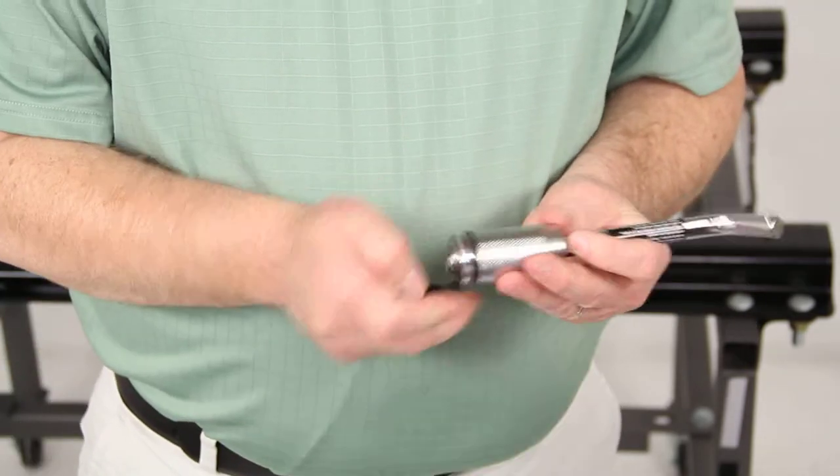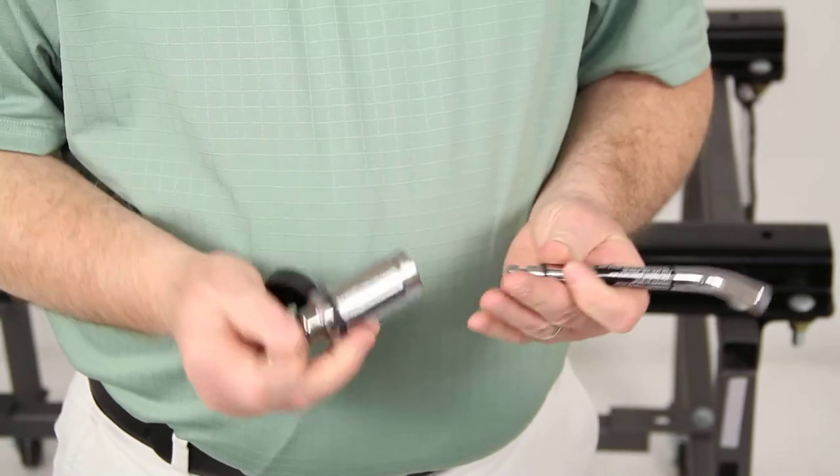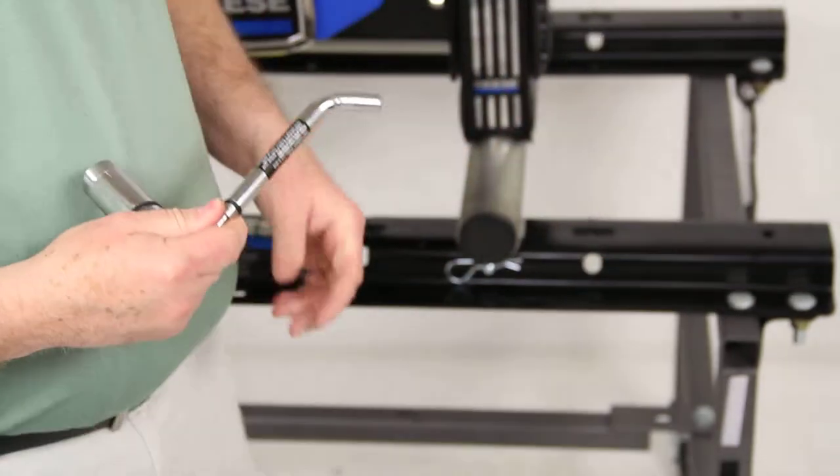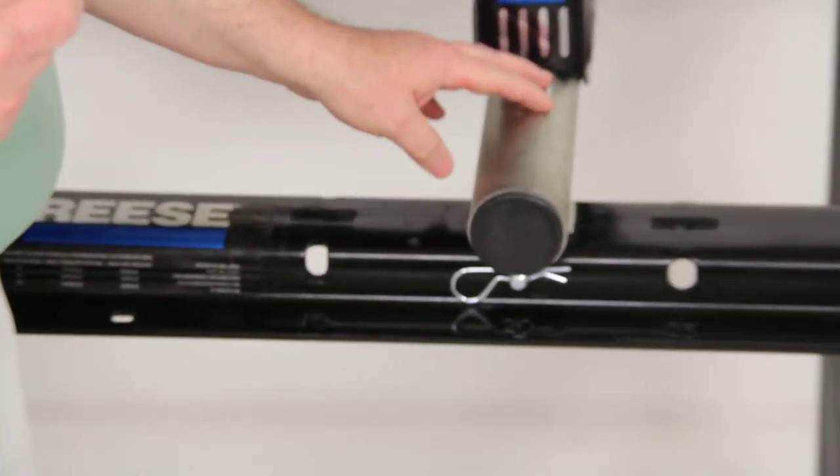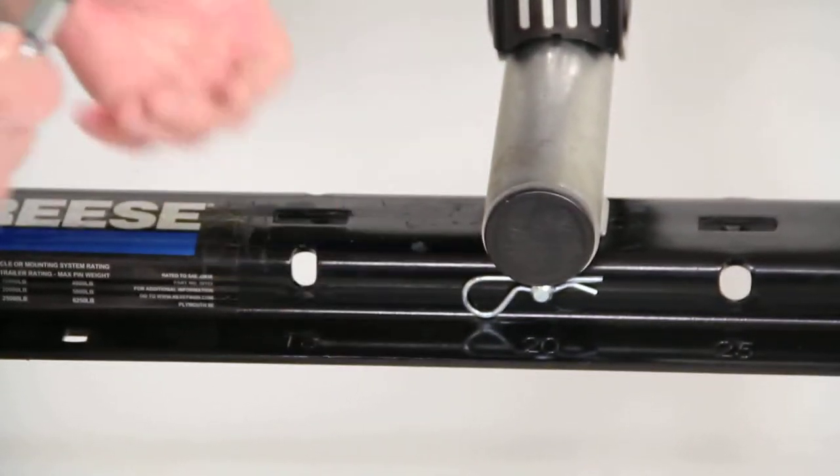Now I'm going to take this off and actually install it. As we go back here, I have an example of a fifth wheel leg. This is on the rails already, and you can see it has the pin and clip already on there.